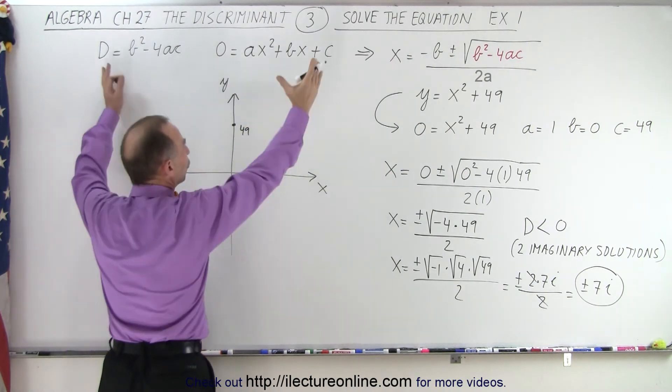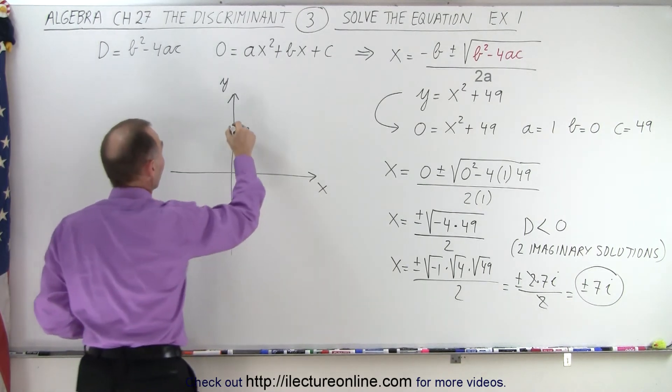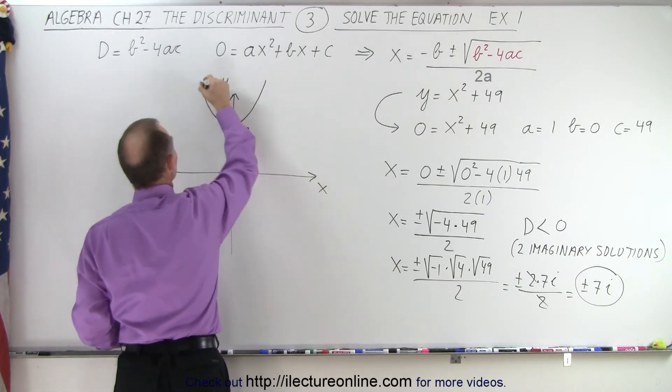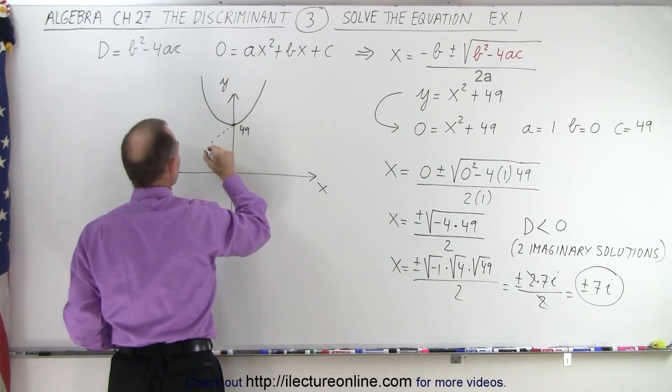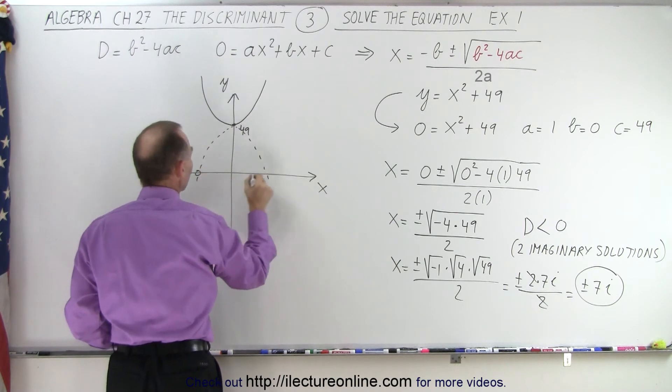y = 49. So this would be the point 49. It must open upward because we know the parabola does not cross the x-axis. So it opens upward like this, and if we draw the mirror image,